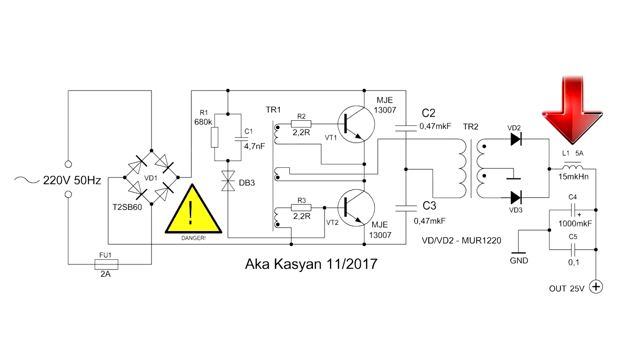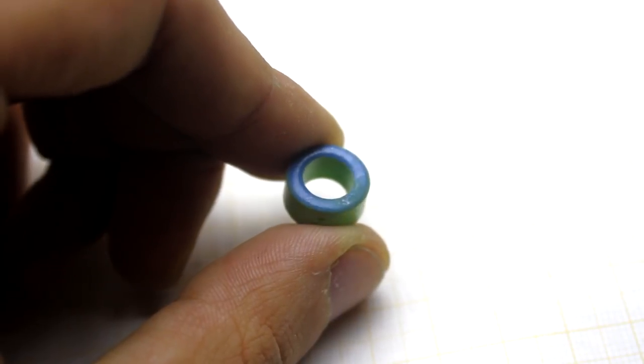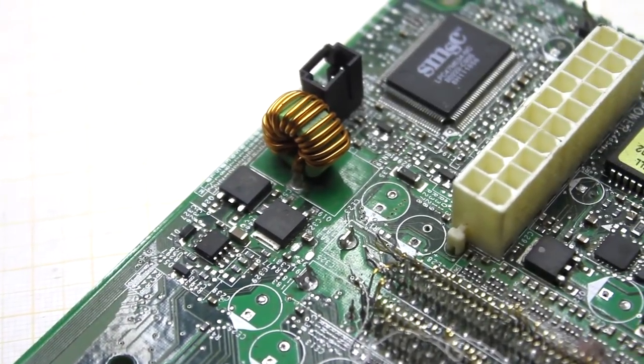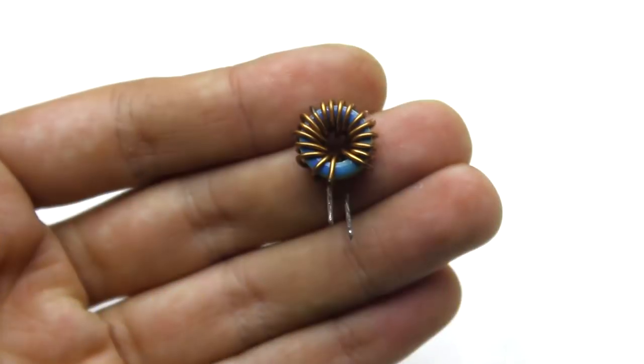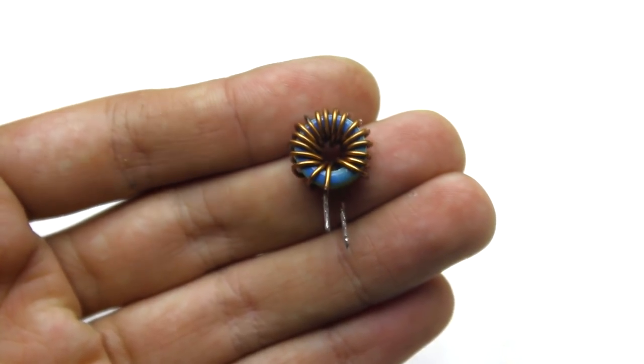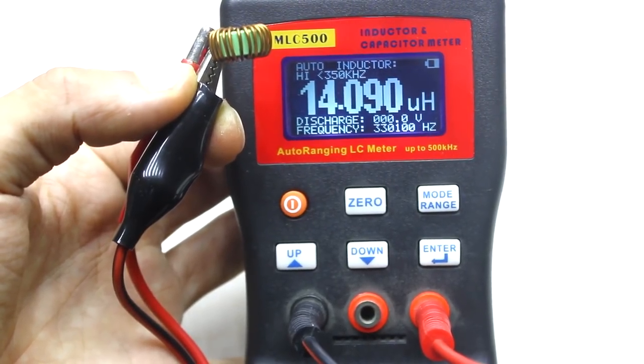After the diode, the throttle is installed. The core is also annular. The material is most likely powdered iron, is taken from the PC motherboard. The native winding was removed. The new one consists of 15 turns of 1 mm wire and the inductance was about 15 µH. The tolerance can be up to 30%.